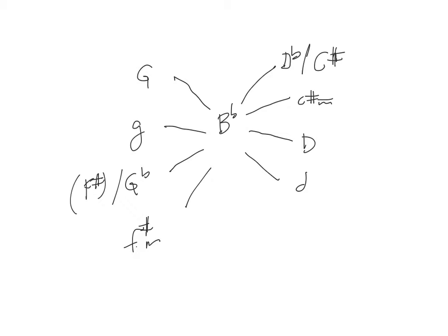If you take B-flat, D, F and compare it to D-flat, F, A-flat, there is one common tone: F. C-sharp, E, G-sharp and B-flat, D, F have zero common tones. D, F-sharp, A and B-flat, D, F have one common tone, which is D. D, F, A has two common tones: D and F.